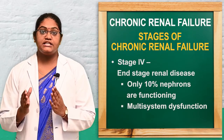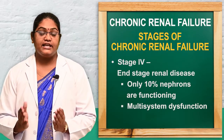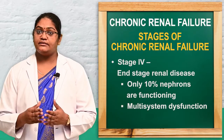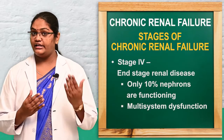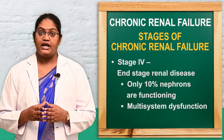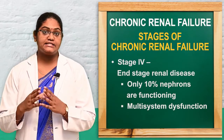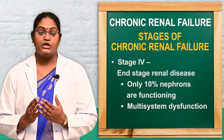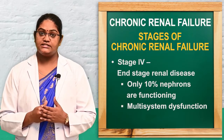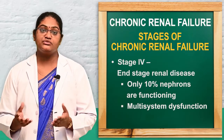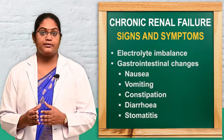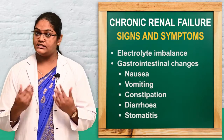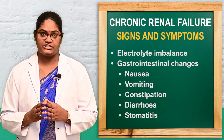The last stage is end-stage renal disease. In this stage there is multi-system dysfunction — as mentioned in the introduction, this is a systemic disease that affects all organs in the body. We can now discuss the clinical manifestations and what systemic changes are seen.